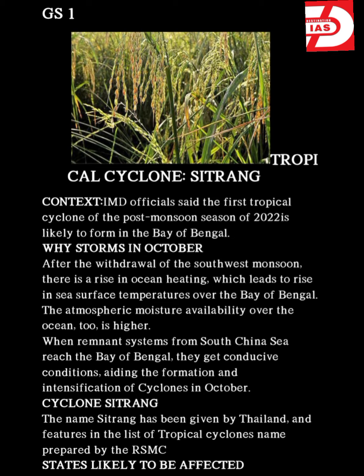IMD — India Meteorological Department — officials said the first tropical cyclone. In meteorology, a cyclone is a large air mass that rotates around a strong center of low atmospheric pressure, counterclockwise in the northern hemisphere and clockwise in the southern hemisphere. As viewed from above, cyclones are characterized by inward spiraling winds that rotate about a zone of low pressure.